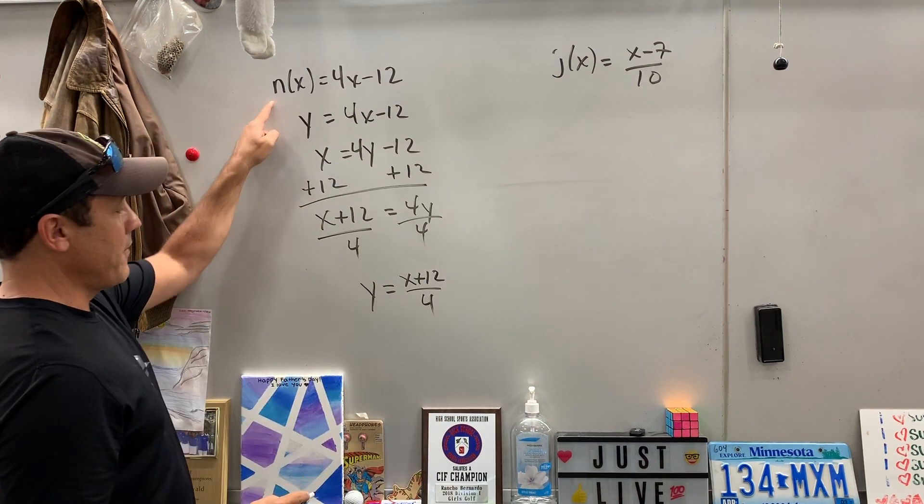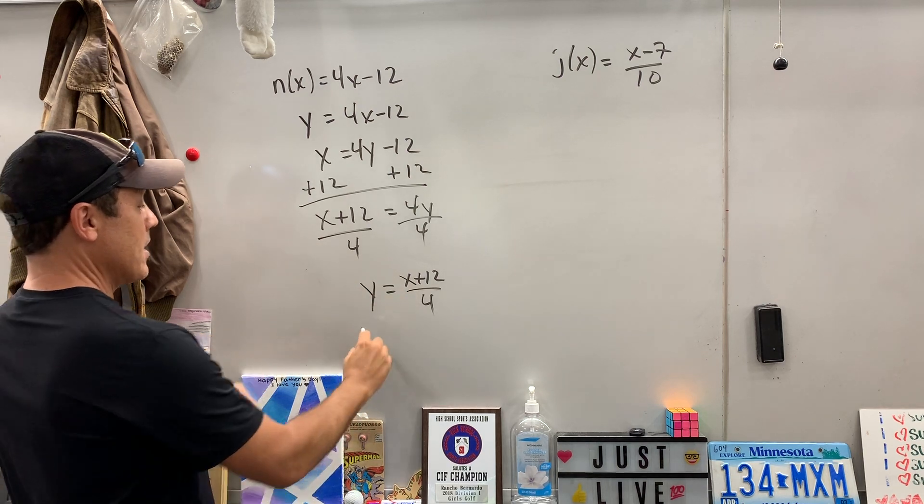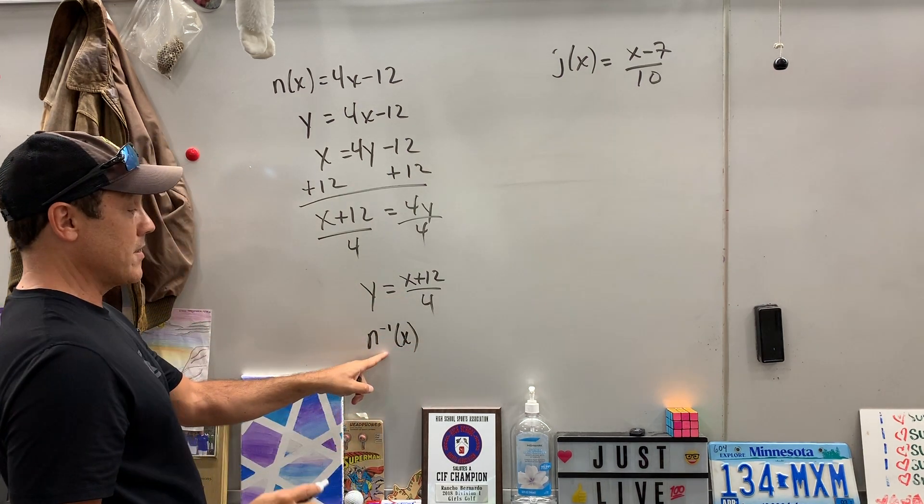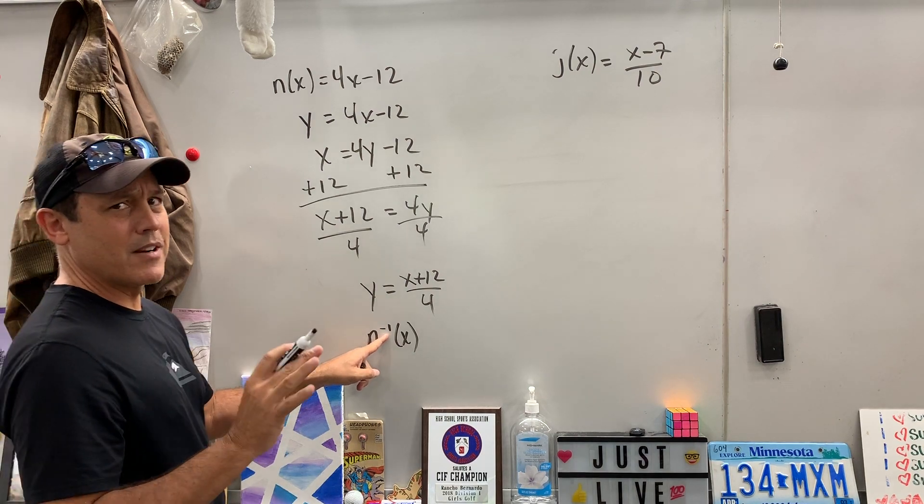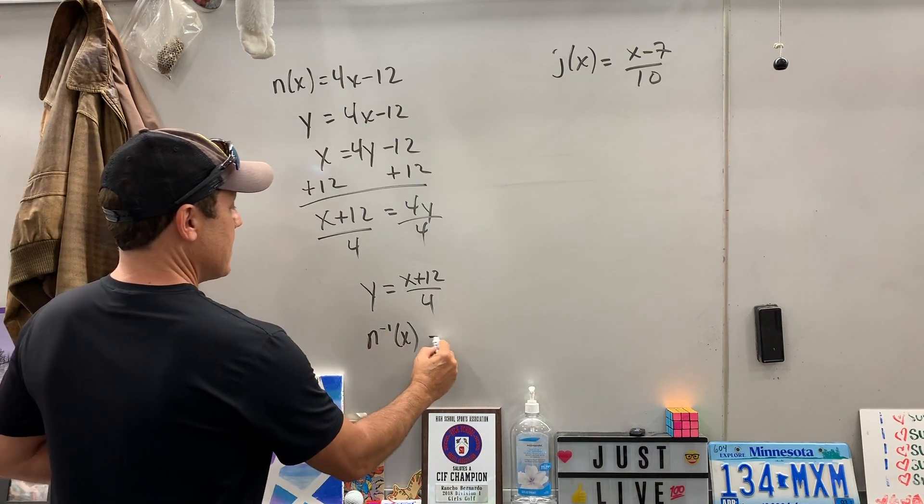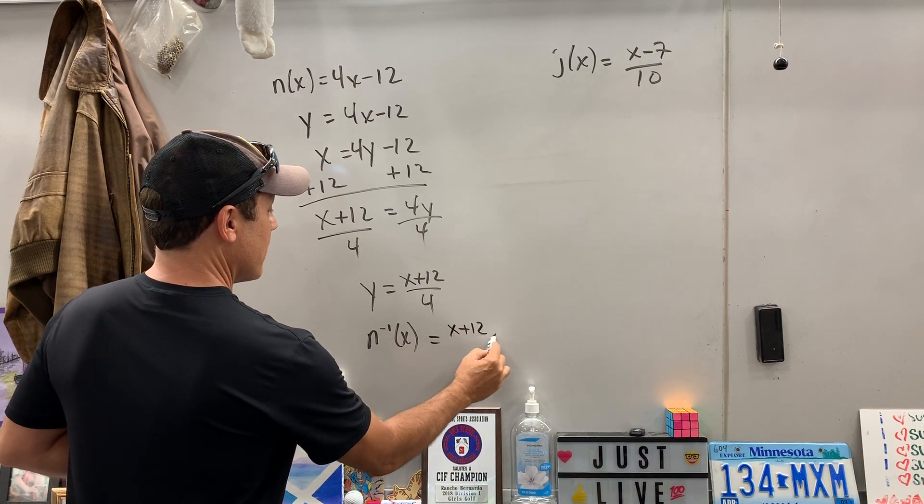But we want n of x, so we're going to replace that. But this is the inverse function. So this is how you write it. The inverse of n of x. It's not n to the negative 1. Don't ever say that. The inverse function of n of x is equal to x plus 12 over 4.